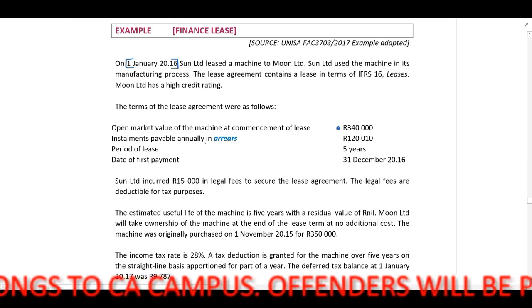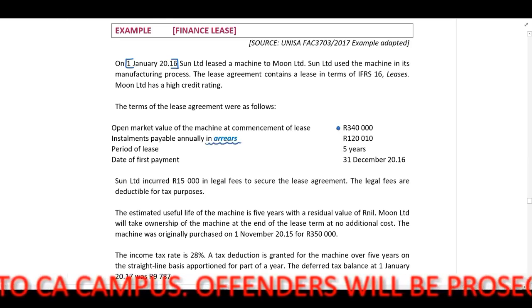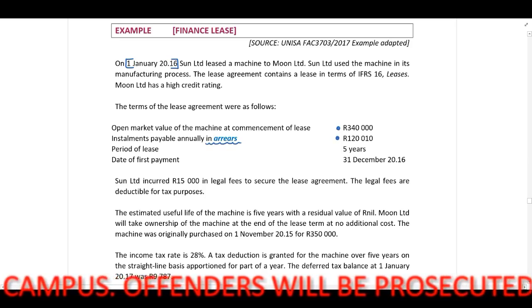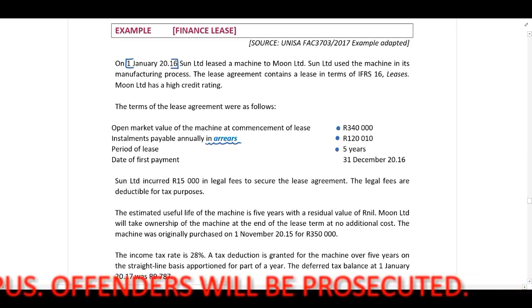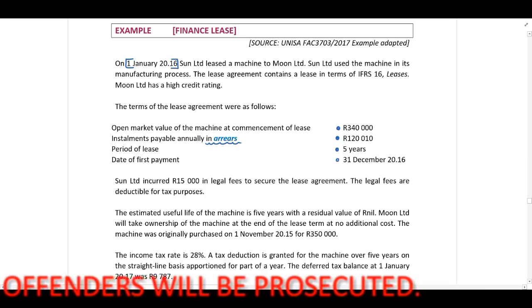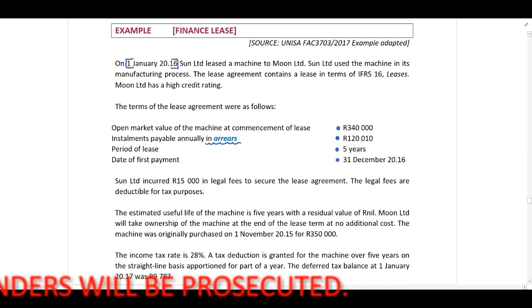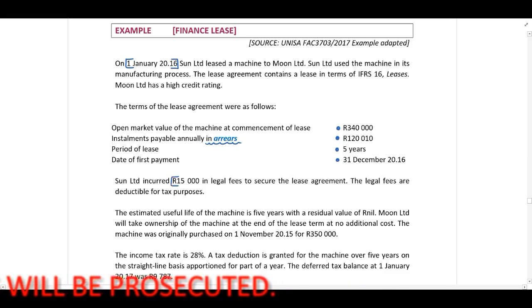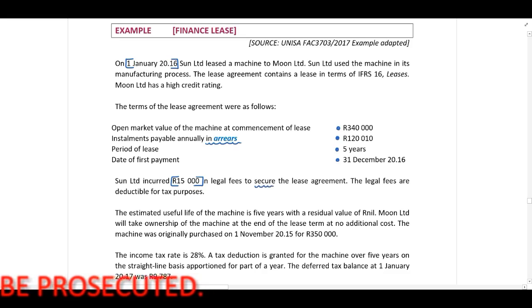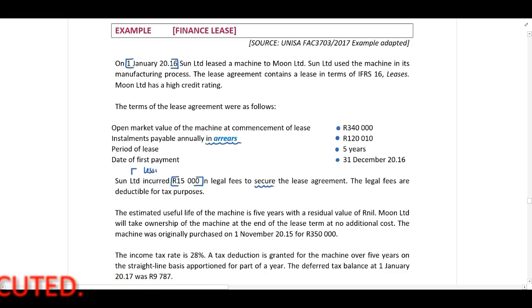Installments payable annually in arrears is R120,010. The period of the lease is 5 years, with the date of first payment being 31 December 2016. Sun Ltd incurred R15,000 in legal fees to secure the lease agreement — remember Sun Ltd in this example is the lessor. The legal fees are deductible for tax purposes, which is very important. The estimated useful life of the machine is 5 years with a residual value of zero.